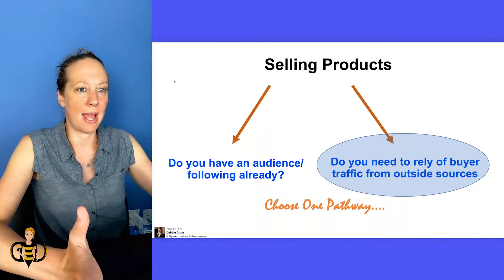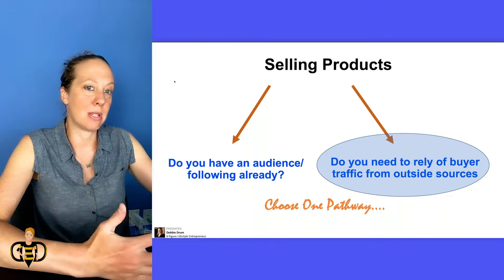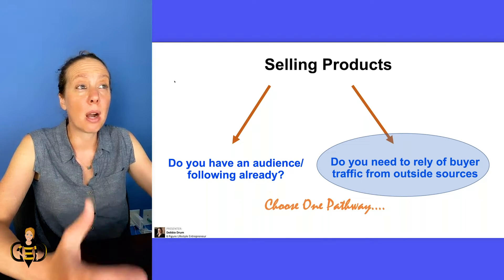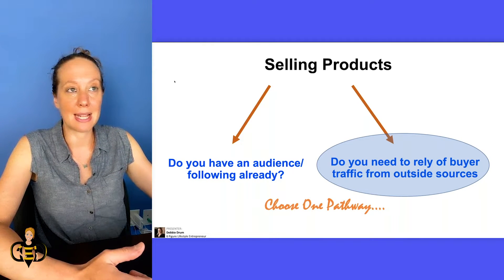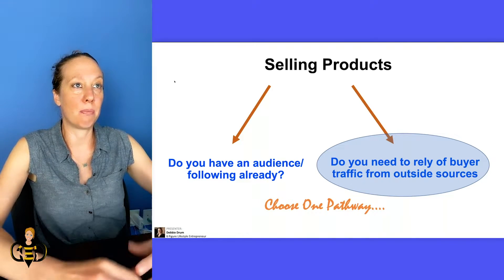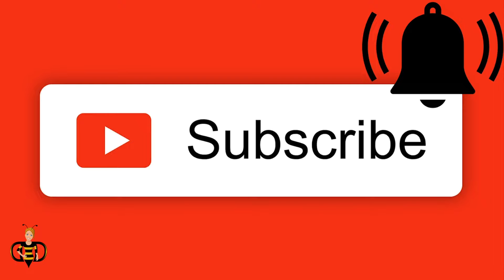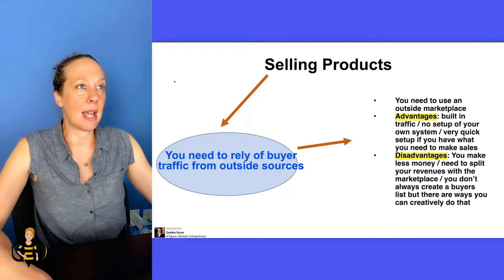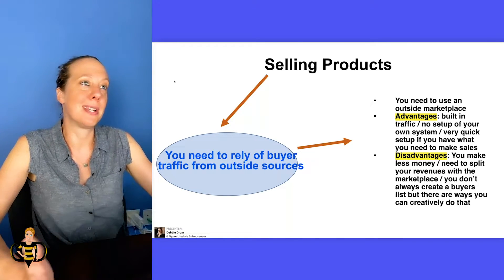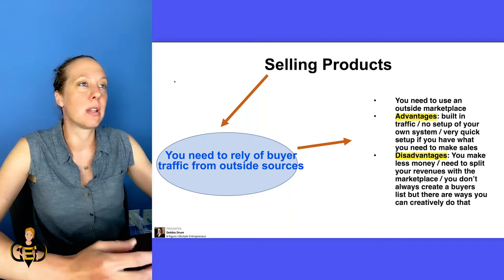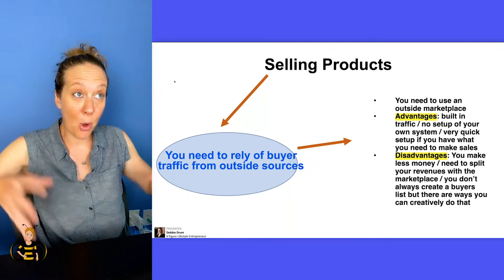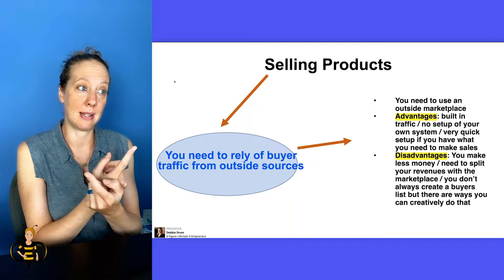If we need to rely on buyer traffic from outside sources and don't have our own sources yet, we're probably going to put our stuff on other marketplaces — we piggyback and take the traffic from those sites so people see our products and services. The advantages are you have a built-in traffic source. You can drive your own traffic to a marketplace or to your own marketplace — you can have both at the same time. Remember, you can sell the same piece of content in multiple places, and that's what makes this very powerful.